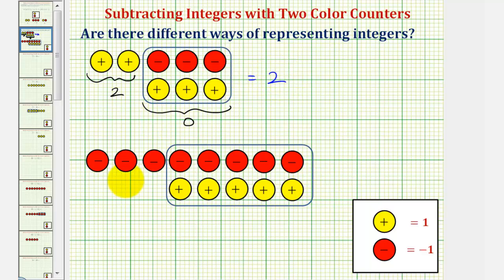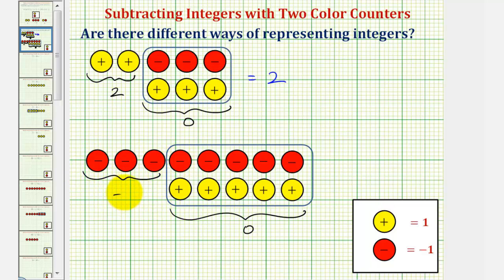Looking at the counters below, notice how these five red counters and five yellow counters would simplify to zero, leaving us with three red counters, which would represent negative three. So together, all these counters would be another way to represent negative three.